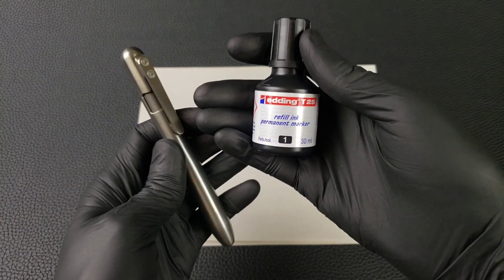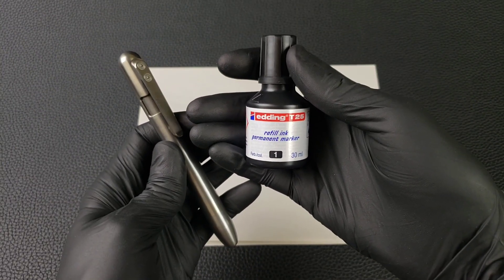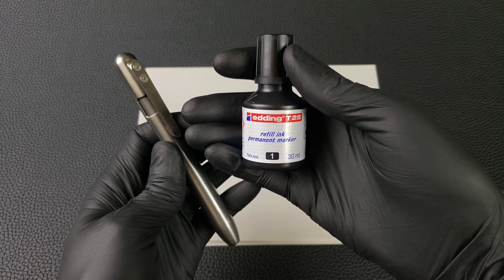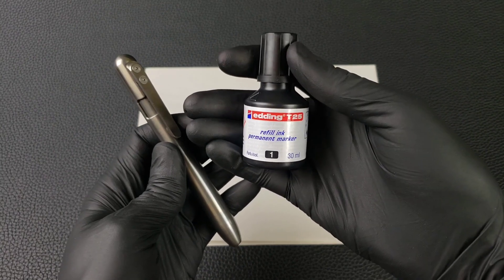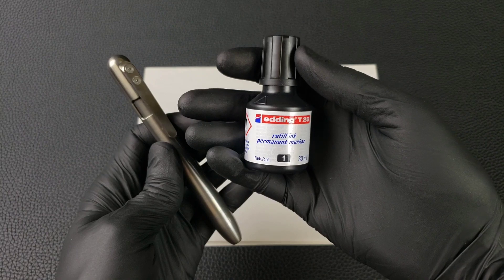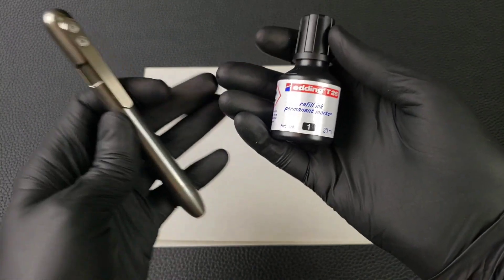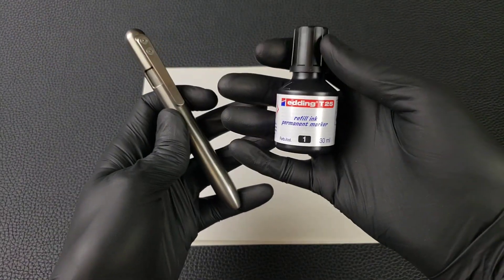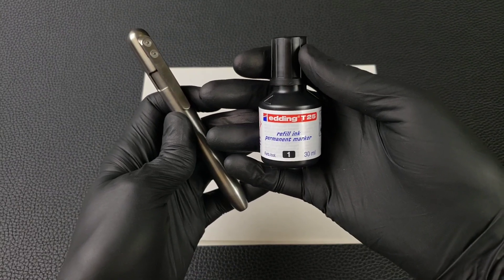There are several permanent marker inks available. The Edding T25 is a very popular permanent marker ink available in different colors. The nice thing about this container is that it's got a built-in dropper, so it's easy to refill. There's other brands too—Pilot makes some, and I list more on my website.